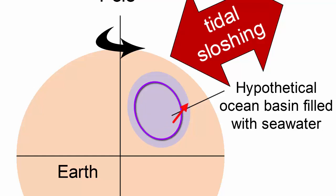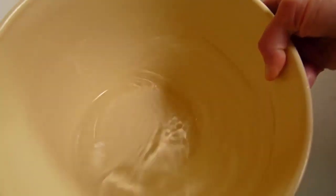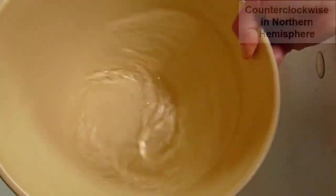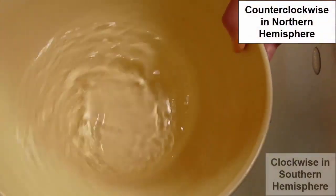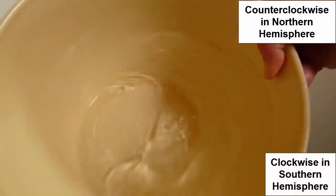Combined together, this sloshing around the edges of the basin creates a rotary wave with a 12-hour and 25-minute period, much like water sloshing around the outside of a bucket, counterclockwise in the northern hemisphere and clockwise in the southern hemisphere.